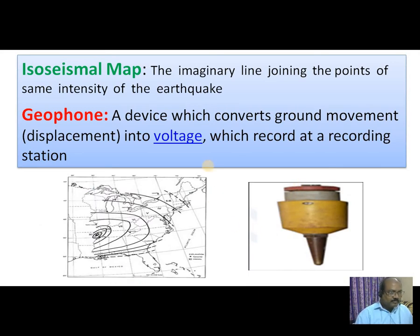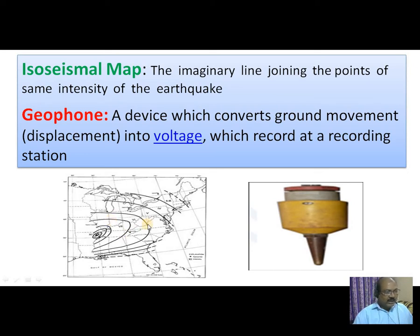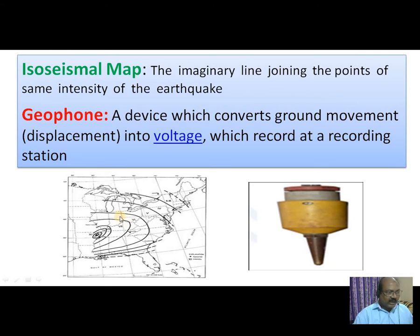Isoseismal map is an imaginary line joining the points of same intensity of the earthquake. For example, if the intensity of the earthquake is 3.2 at certain points, and 4.8 at other points, an imaginary line joining the points of equal intensity forms the isoseismal map.